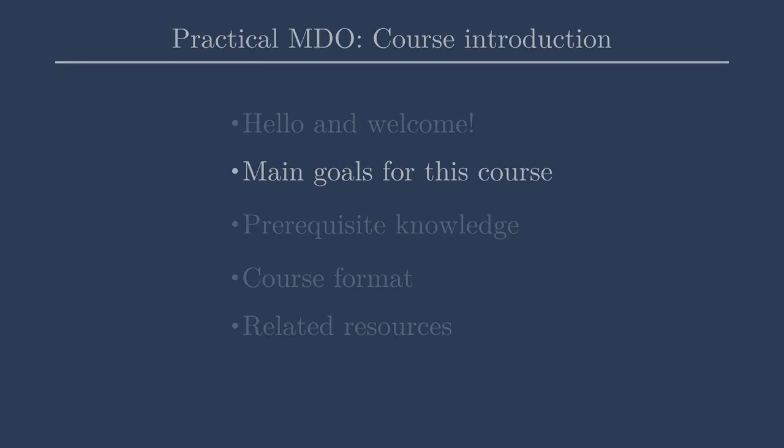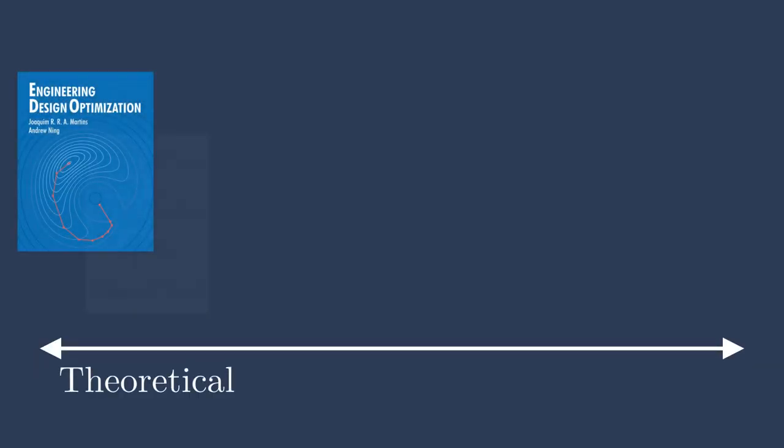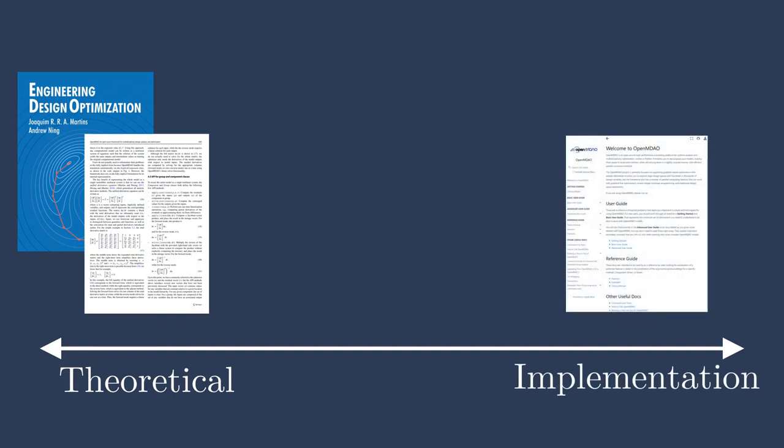Our main goals for this course are to provide a resource and a set of lectures and code to help bridge the gap between the theoretical and the implementation. On the theoretical side of things, we have Engineering Design Optimization by Andrew Ning and Kim Martins. It's a fantastic book, very exhaustive, and it talks about multidisciplinary design optimization, especially with the focus on the theoretical, but it also has a lot of really good examples.